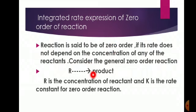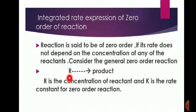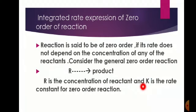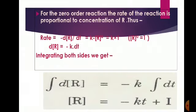Consider the general zero order reaction: reactant gives product. Here R is the concentration of reactant and K is the rate constant. The rate constant never depends on the concentration of the reactant. So for the zero order of reaction, the rate of reaction does not depend on reactant concentration at all.